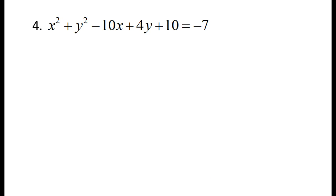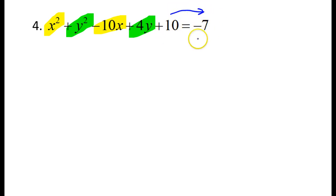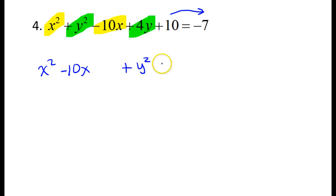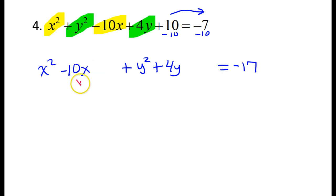Let's try number 4. Again, we need to group together the x terms and the y terms. This constant is going to need to go to the other side, so I will subtract it. That gives me x squared minus 10x — grouping the x's together, leaving a space to complete the square. Now the y terms: y squared plus 4y — leave a space. Now I'm subtracting 10 from both sides, so this is going to make negative 17. Time to complete the square — half the middle squared. Half of negative 10 is negative 5, and negative 5 squared is positive 25. So I immediately add 25 to the right-hand side to balance out that change.